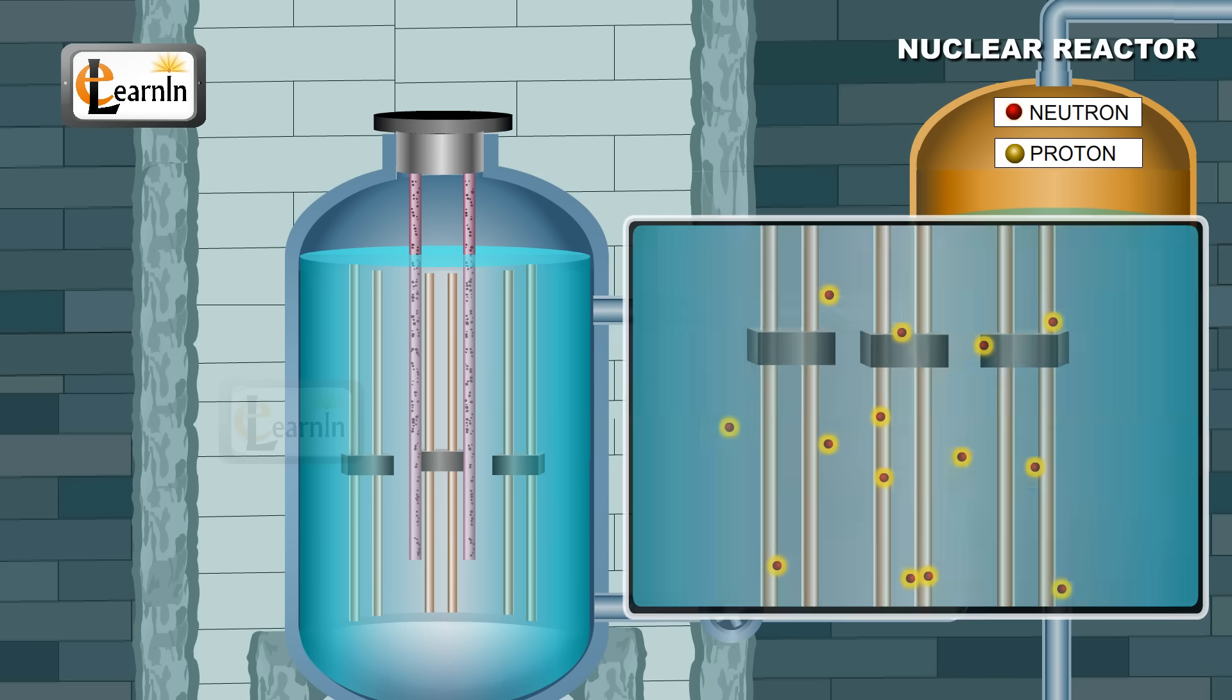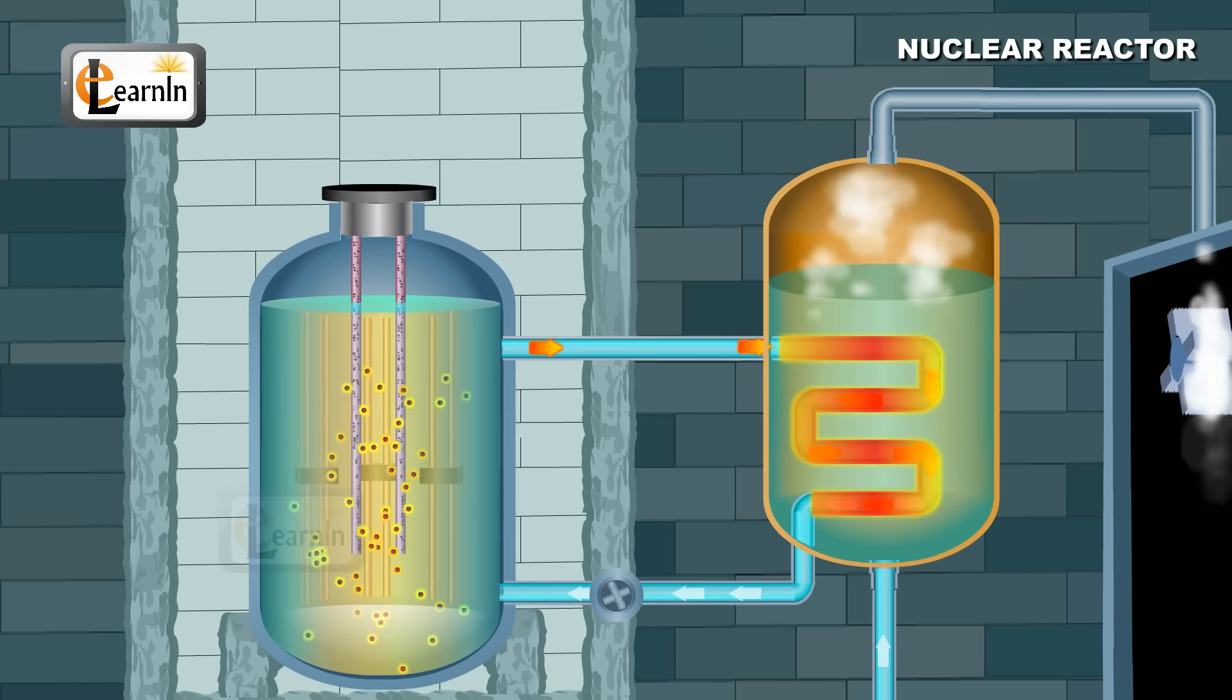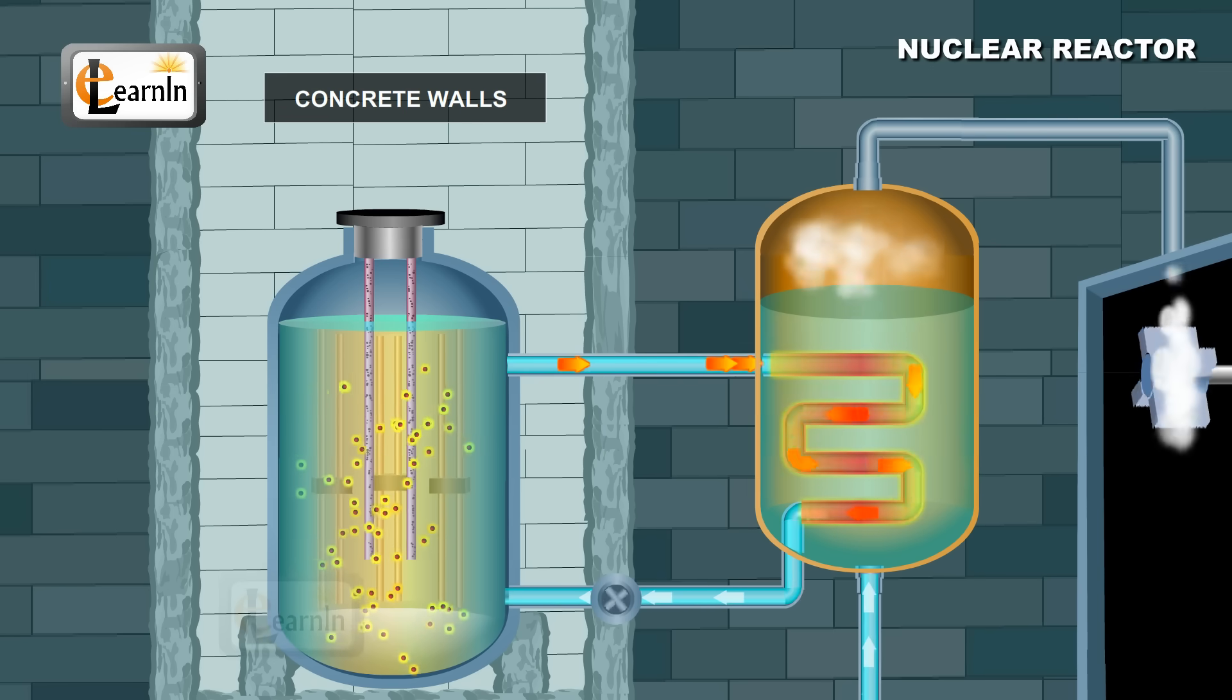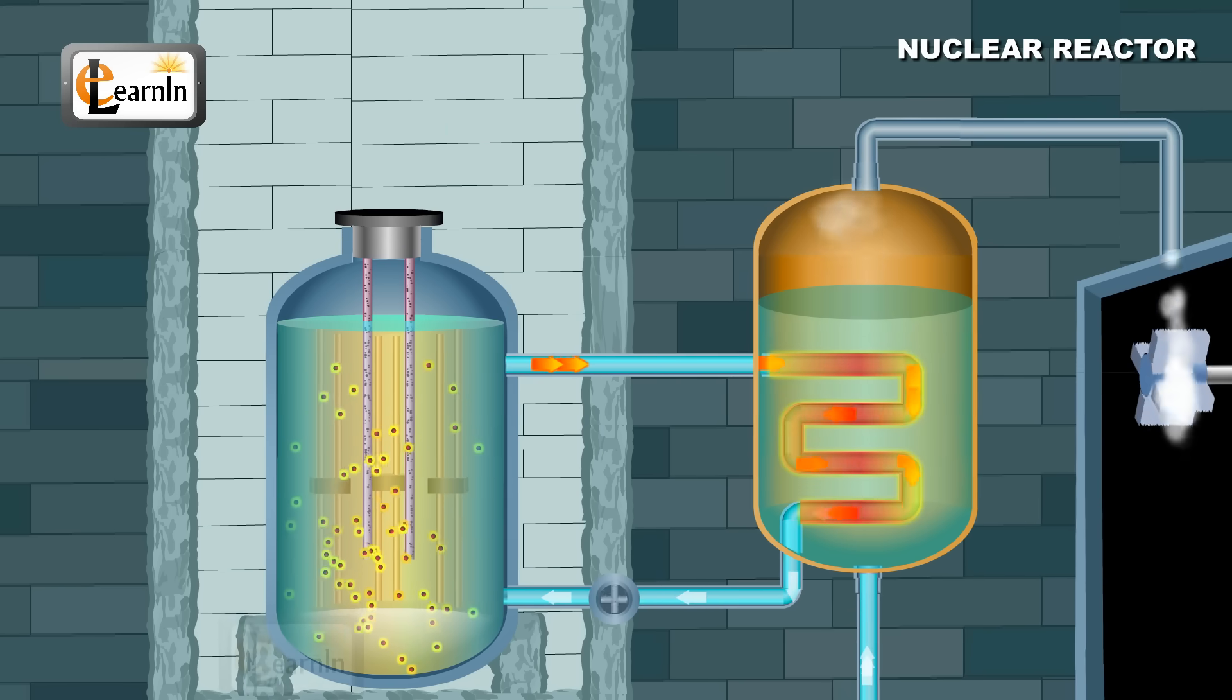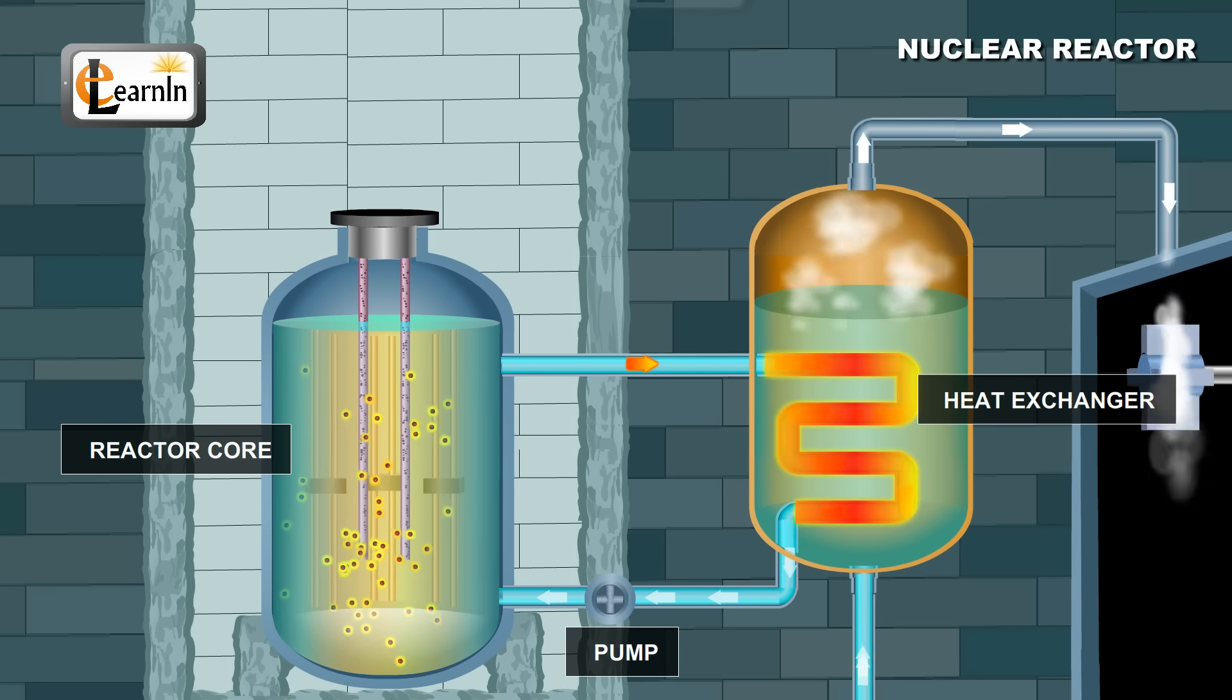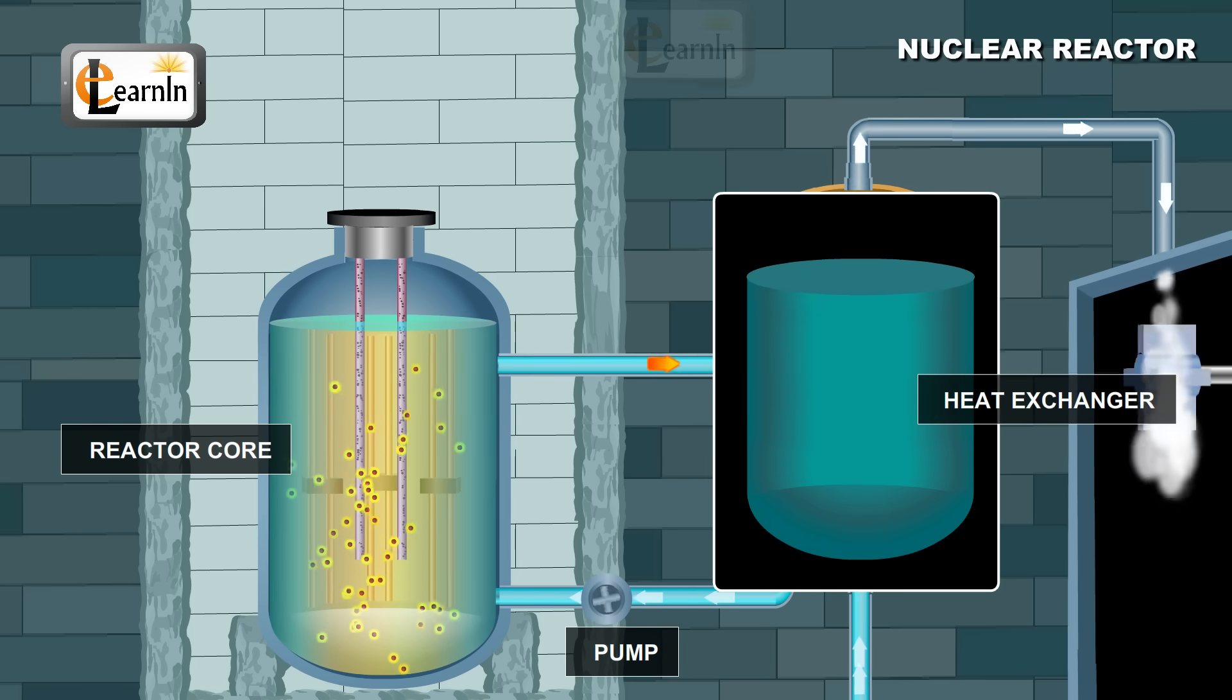Now that we know the components of the nuclear reactor, let's understand the working of a nuclear reactor. It's usually enclosed in a shield made of thick concrete walls. It consists of a reactor core, pump, and heat exchanger. The reactor core and pump are placed in contact with the water, which is usually the heat exchanger in these reactors.